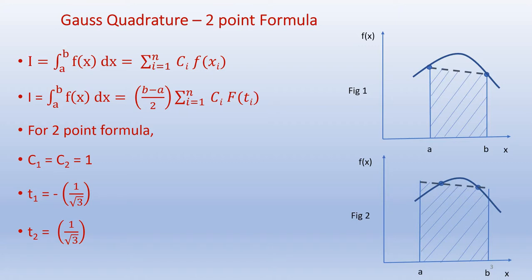Going back to the two-point formula, we have I equals integral from a to b of f(x) dx, which equals the sum from i=1 to n of C_i f(x_i), which equals (b-a)/2 times the sum from i=1 to n of C_i f(t_i). For the two-point formula, we have C_1 equals C_2 equals 1, and t_1 equals negative 1 over root 3 and t_2 equals 1 over root 3. These are the Gauss Quadrature points.